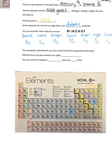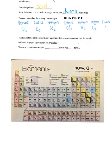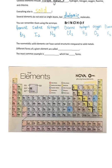Last little bit here is the non-metallic solid elements can have varied structures compared to solid metals. There are only a few non-metals, and I'll use another highlighter color down here - carbon, phosphorus, sulfur, selenium, and iodine. Essentially those are our only solid non-metals, but they are a little bit weirder. They can have some different structures because they are non-metals.